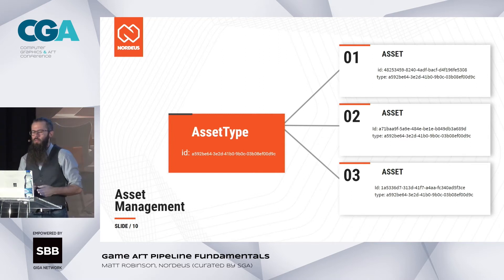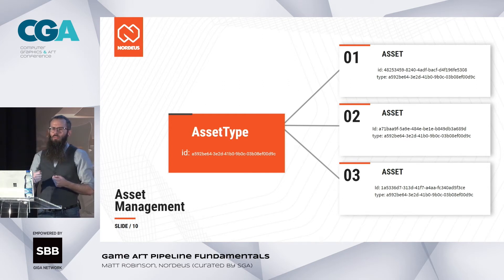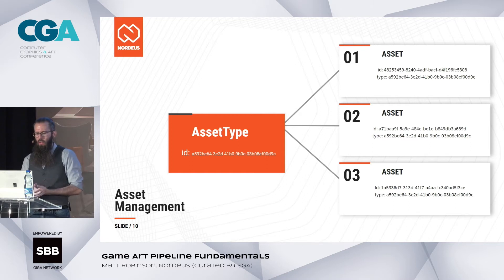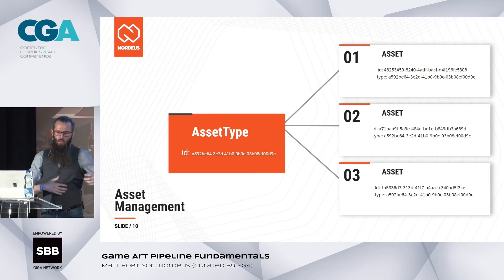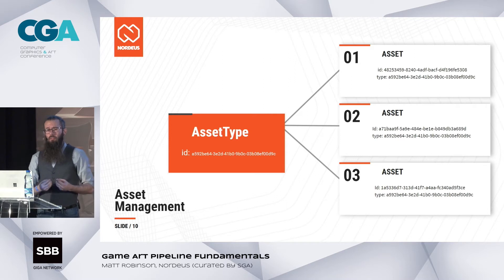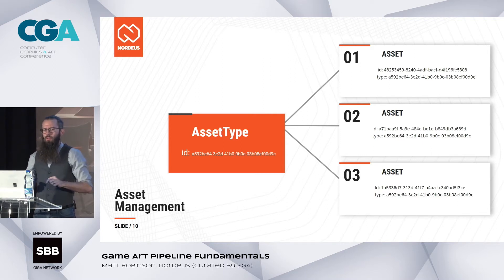UUIDs add a bit of complexity, but you get a lot from them. They allow you to rename things — if all connections are based on maintaining IDs, you can rename things without those connections breaking. They also help with legacy data where names conflict, allowing you to identify things individually without having to spend time renaming everything.